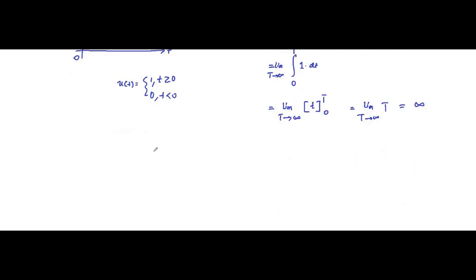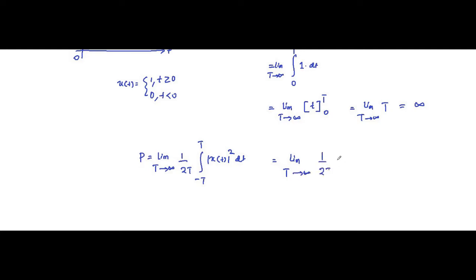Now we have to determine the power. The power of a signal is limit T tends to infinity of (1/2T) times the integral from minus T to T of |x(t)|² dt. Basically it is limit T tends to infinity of (1/2T) multiplied by E, because this integral portion represents the energy. The energy of the signal which we have calculated here is equal to infinity.